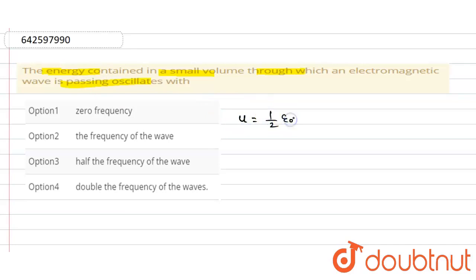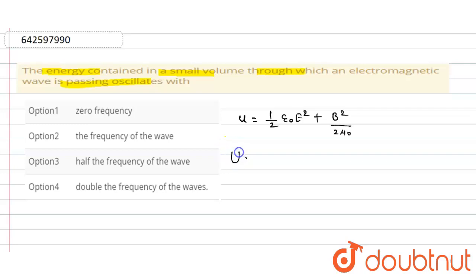The energy density is: half epsilon naught times E naught squared plus B naught squared divided by 2 mu naught, where E is the electric field and B is the magnetic field. The energy of a given volume is calculated by multiplying the volume by this expression: U equals half epsilon naught E squared plus B squared divided by 2 mu naught, multiplied by volume V.